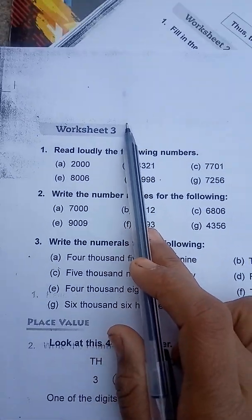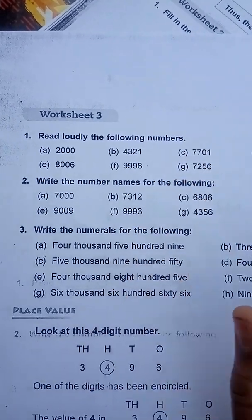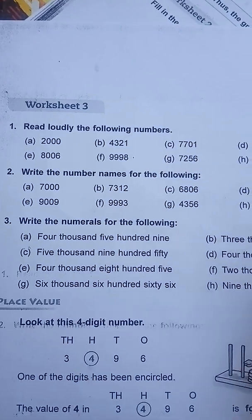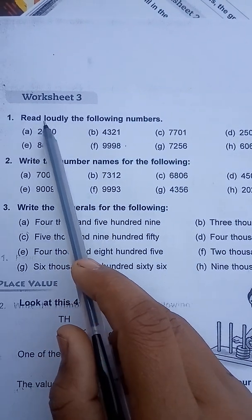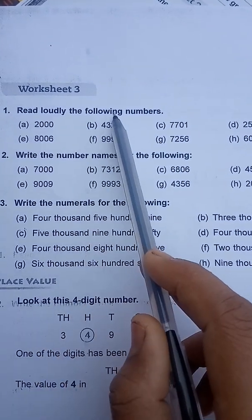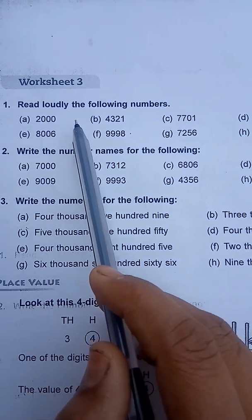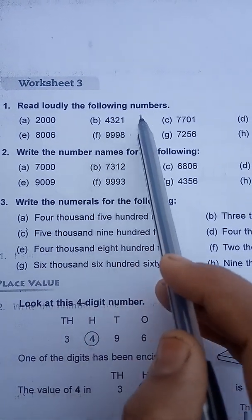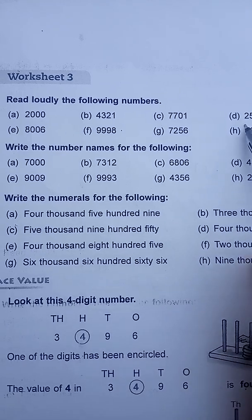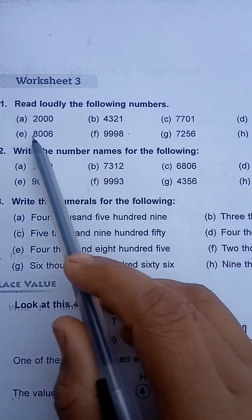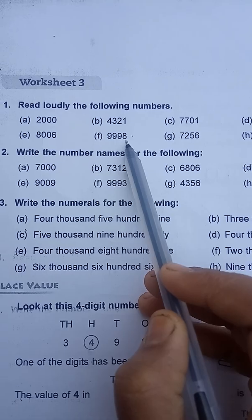Worksheet three — worksheet two is done, and worksheet three is also very easy. Read loudly the following numbers. You have to write the numbers: four thousand three hundred and twenty-one, seven thousand seven hundred and one, two thousand five hundred and eight, eight thousand six, nine thousand nine hundred and ninety-eight.